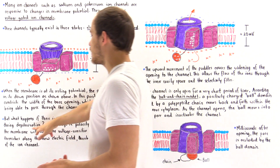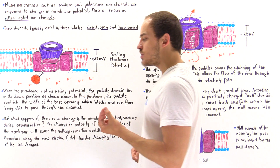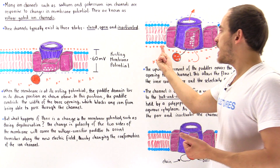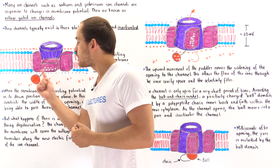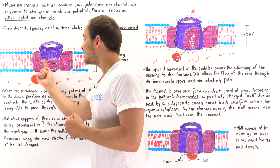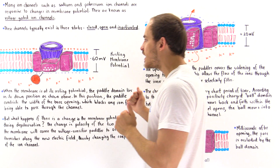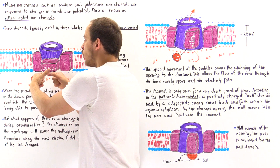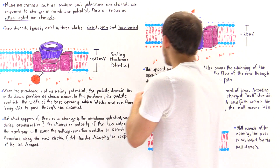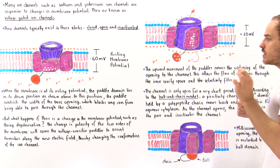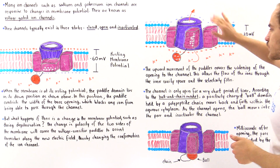When we undergo depolarization and change the polarity, we also change the direction of the electric field lines — instead of running one way, they now run the other way. That changes the conformational orientation of the paddles because they have a positive charge. Instead of being oriented downward, they switch upward. As they move upward, that no longer constricts the opening of the pore, so the purple region opens up and allows the movement of ions from high to low electrochemical potential.